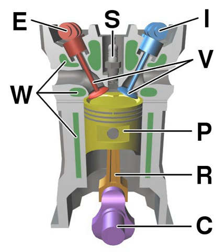Split cycle engines separate the four strokes of intake, compression, combustion and exhaust into two separate but paired cylinders. The first cylinder is used for intake and compression. The compressed air is then transferred through a crossover passage from the compression cylinder into the second cylinder, where combustion and exhaust occur. A split cycle engine is really an air compressor on one side with a combustion chamber on the other.